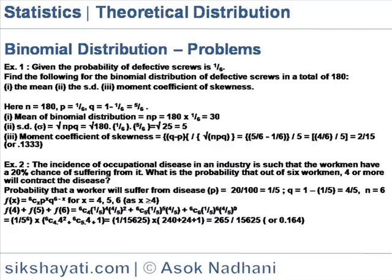Binomial distribution. Given the probability of a defective screw is 1 by 6, find the following for the binomial distribution of defective screws in a total of 180: the mean, the standard deviation, the moment coefficient of skewness.